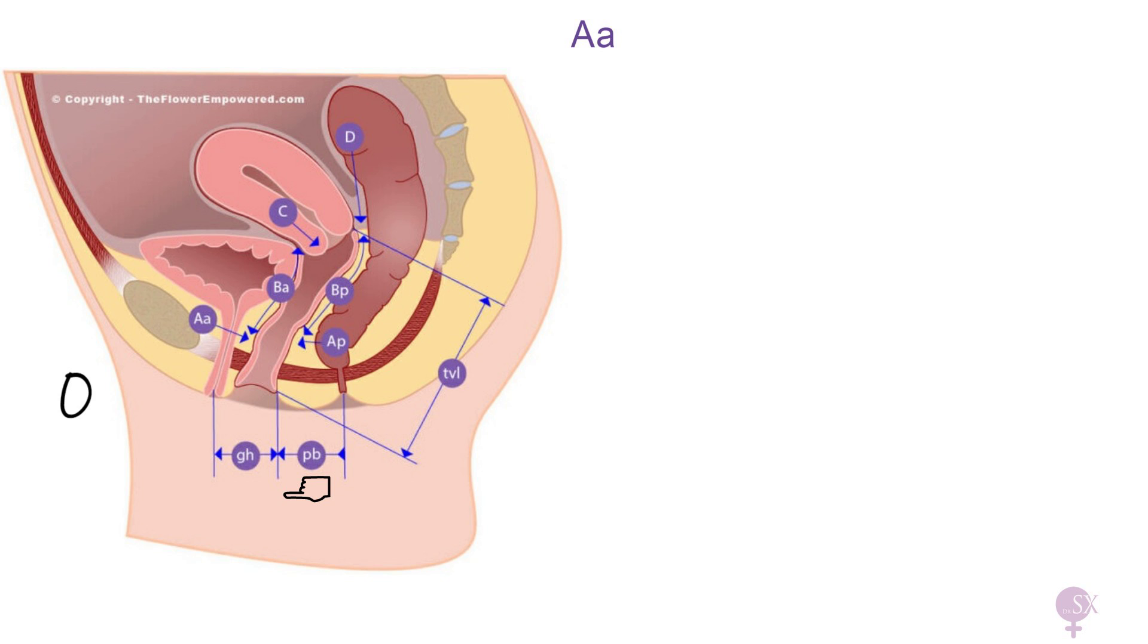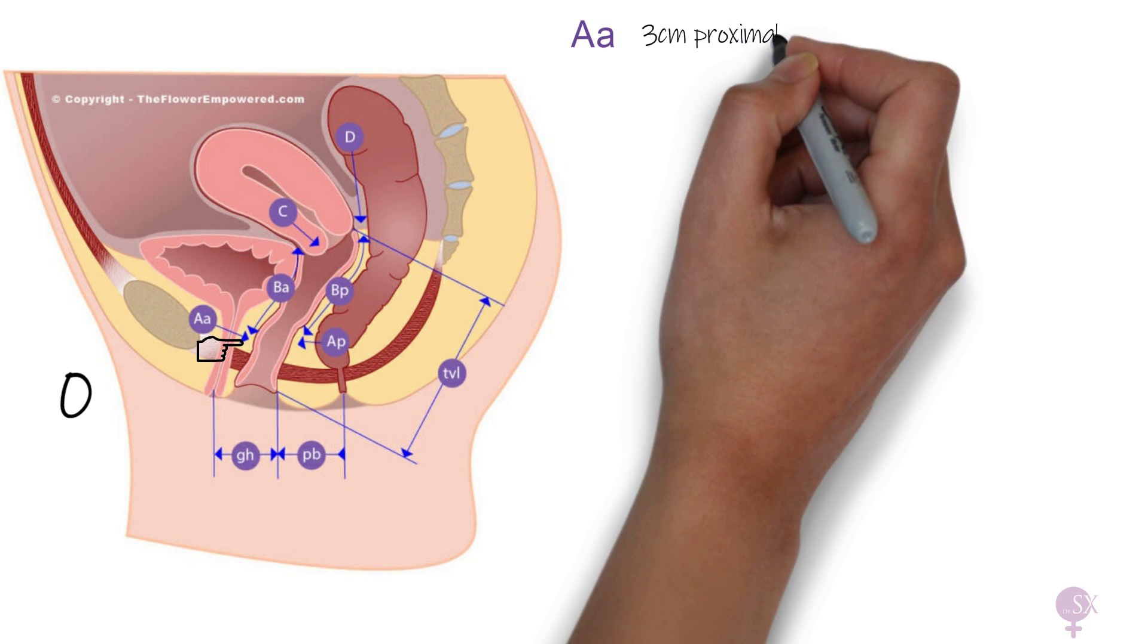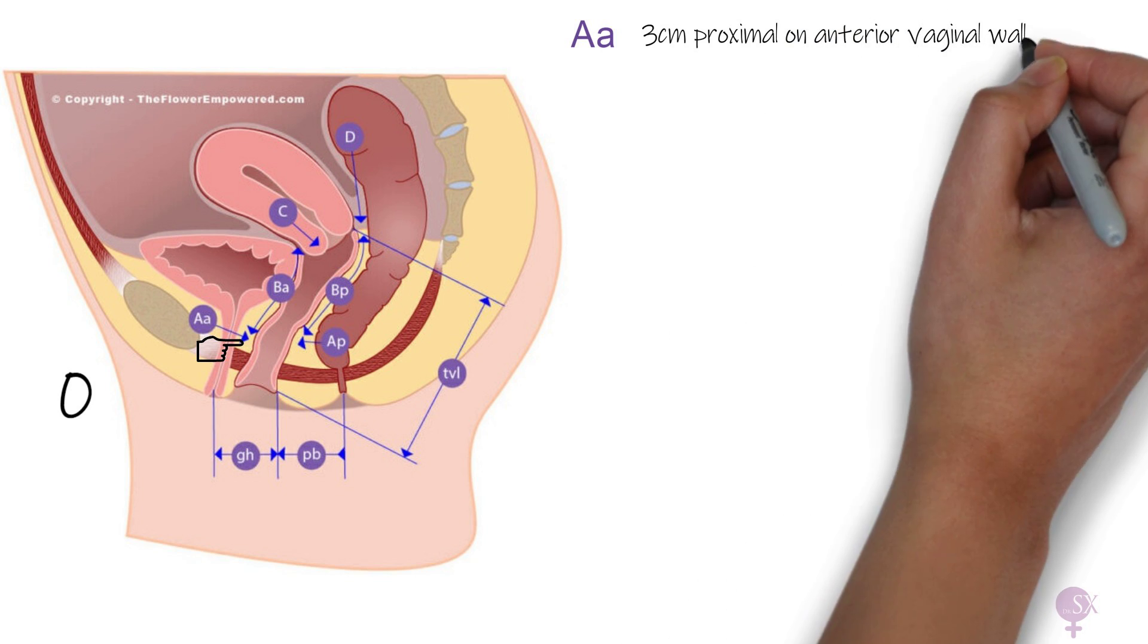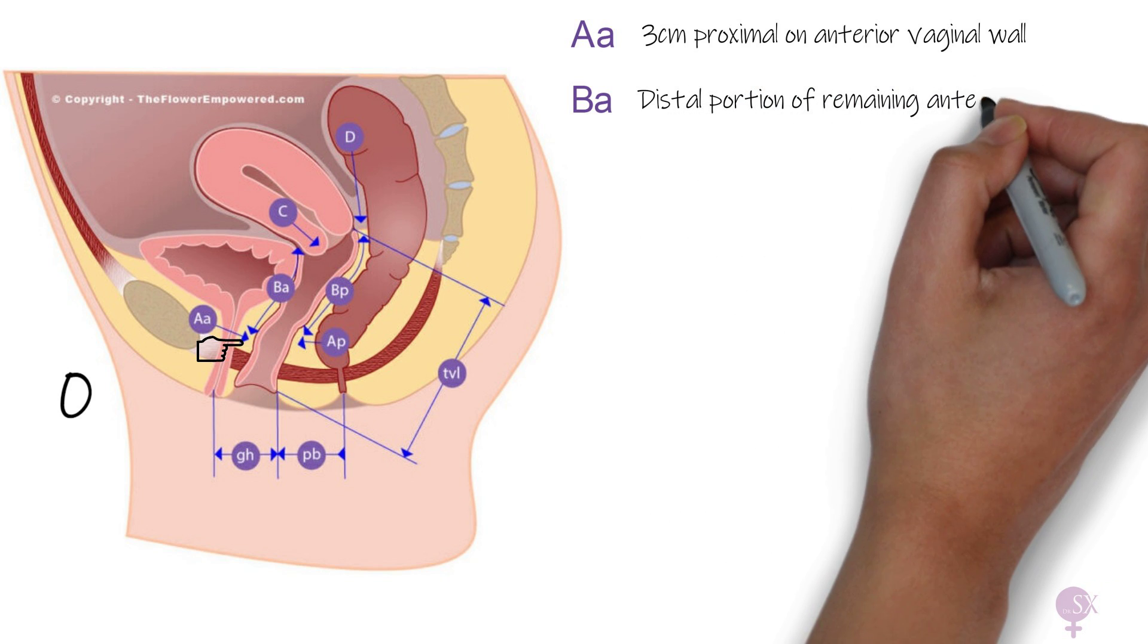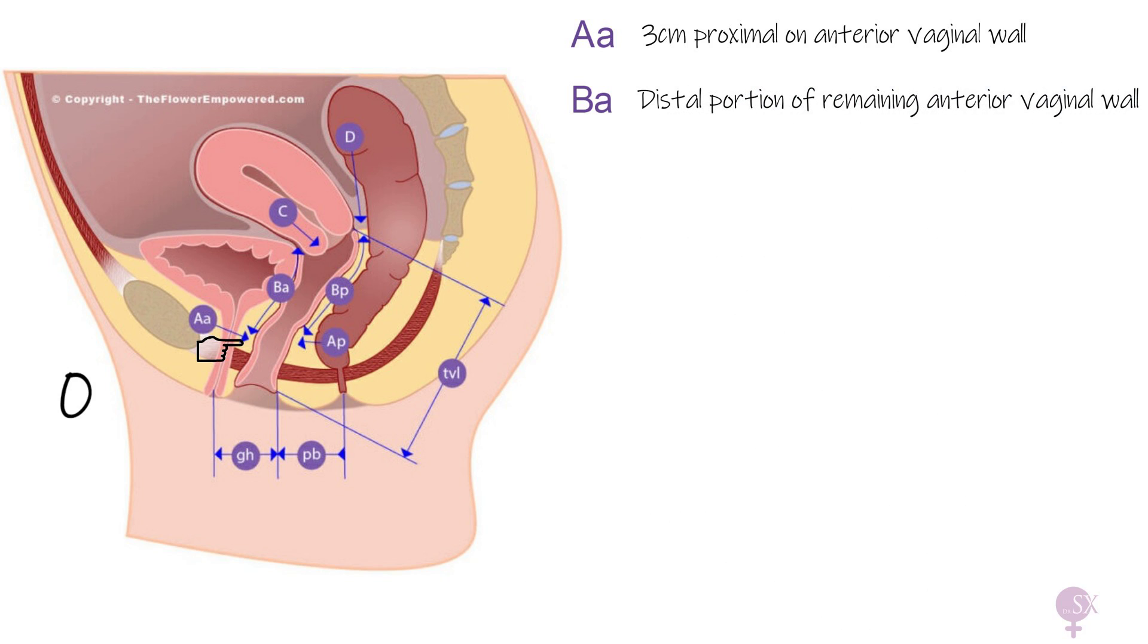Aa refers to a point on the anterior vaginal wall which is three centimeters proximal to the hymen. Therefore, in this picture with no prolapse, it is at minus three. This can range from minus three to plus three. Ba refers to the distal portion of the remaining anterior vaginal wall, so in this case it is also at minus three. This can range from minus three to plus seven in severe cases.